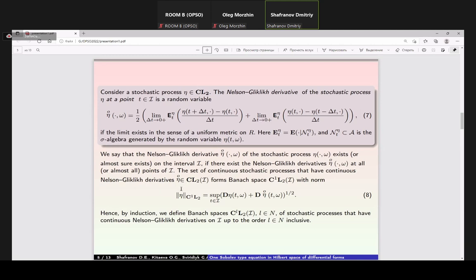Big I if they exist the Nelson-Gliclich derivative at all or almost all points of I. The set of continuous stochastic processes that have continuous Nelson-Gliclich derivatives forms Banach space C supplement 1 L sub 2 from big I with norm 8. Hence by induction we define Banach space C supplement l L sub 2, l from natural numbers, of stochastic processes that have continuous Nelson-Gliclich derivatives on I up to the order l inclusively.